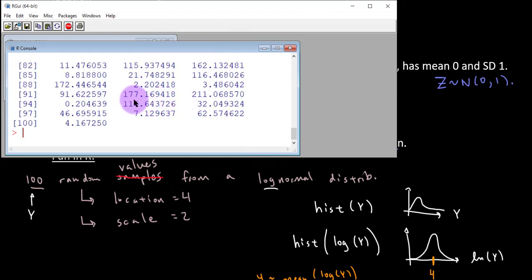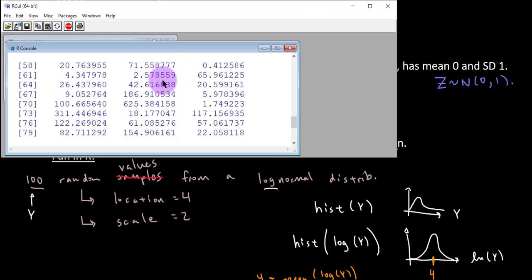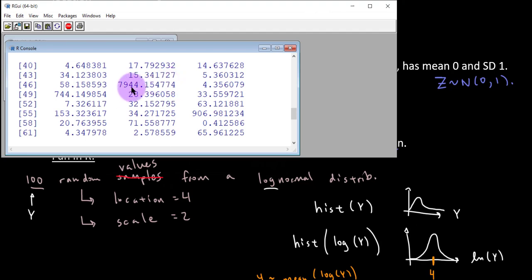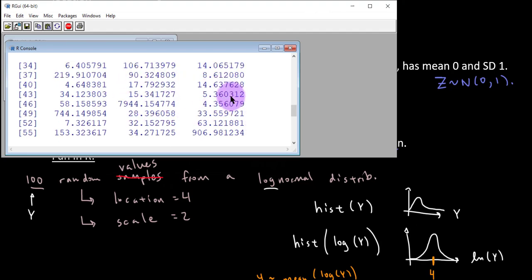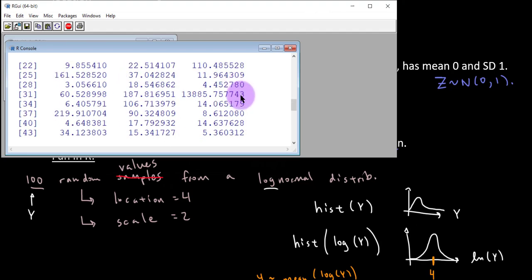So our variable Y looks like it ran. And maybe we want to look at what these values look like. All right, we've got 177, 44.2, some 115s, just 7,900 or so. Pretty cool. So maybe you can see, 13,800.